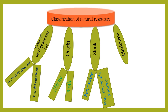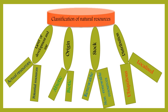On the basis of distribution, we have two types of resources: ubiquitous and localized. Ubiquitous resources are found everywhere — for example, air is a ubiquitous resource. Localized resources are limited to a certain area or place — for example, coal, copper, and iron are localized resources.